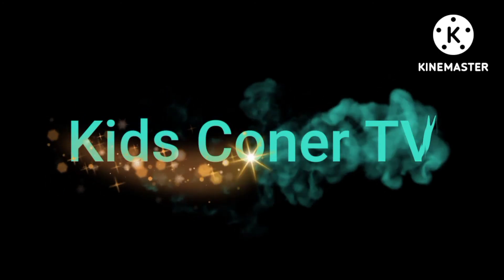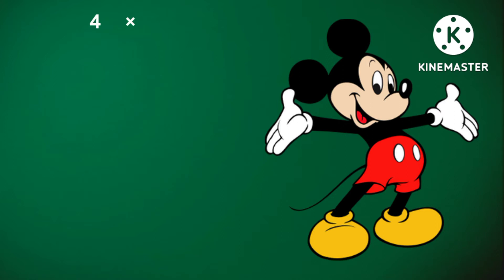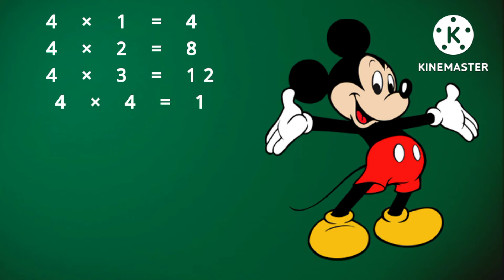Kids Corner TV. Hello kids, in today's video we are going to learn about the four times table. So let's start. Four ones are four, four twos are eight, four threes are twelve, four fours are sixteen.